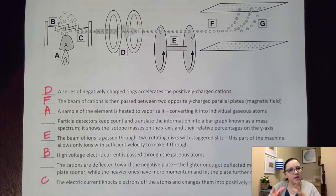So yes, they're all cations, but each of those cations has a different mass. And so they're going to be deflected ever so slightly differently depending on what their mass is.